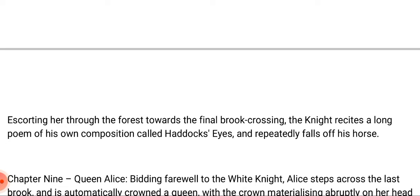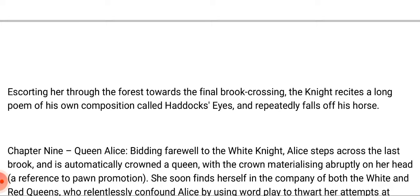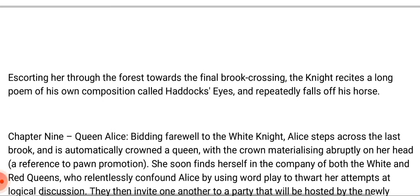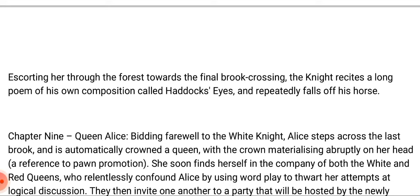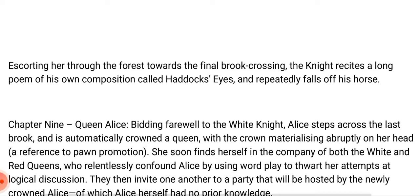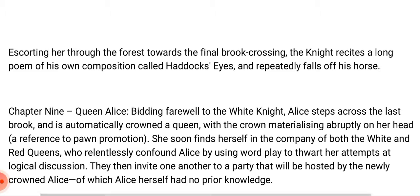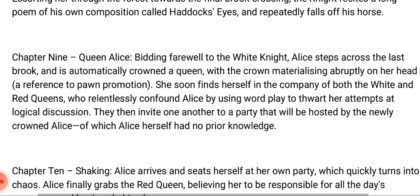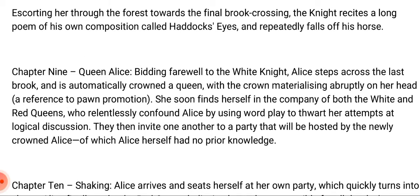Chapter nine is titled 'Queen Alice.' Bidding farewell to the White Knight, Alice steps across the last brook and is automatically crowned a queen, with the crown materializing abruptly on her head — a reference to pawn promotion. She soon finds herself in the company of both the White and Red Queens, who relentlessly confound Alice using wordplay to thwart her attempts at logical discussion. They invite one another to a party to be hosted by the newly crowned Alice, of which Alice herself had no prior knowledge.